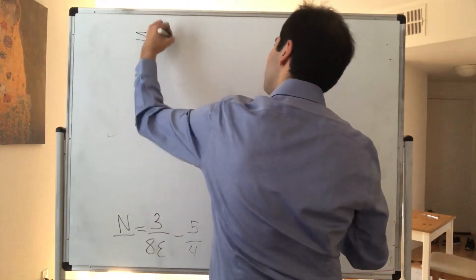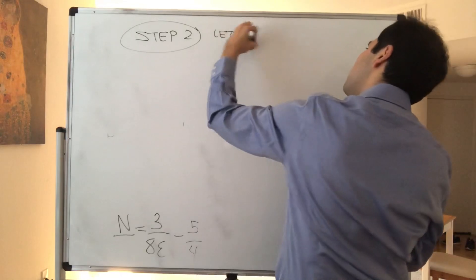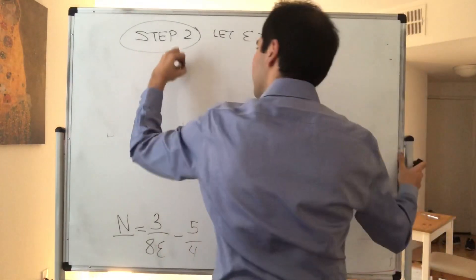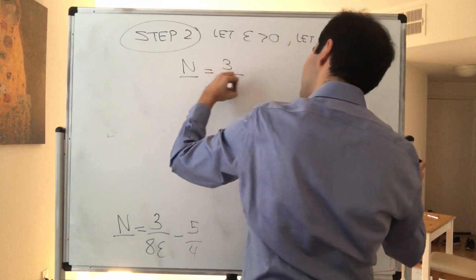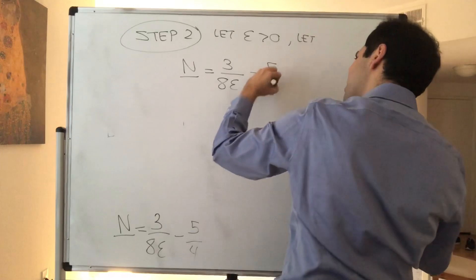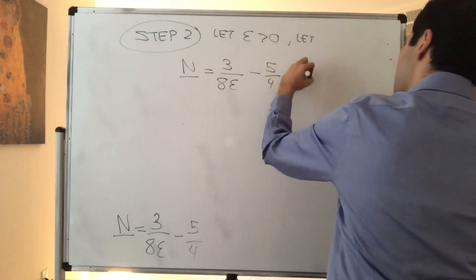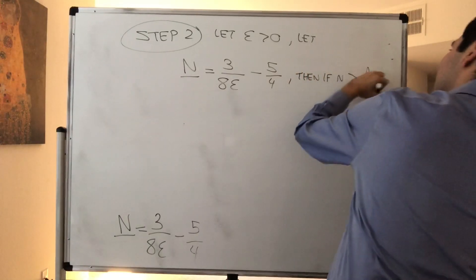So now, it's your actual proof. So step two, so let epsilon be positive, and let N be that number, 3 over 8 epsilon minus 5 fourths. Then, if N is bigger than that threshold,